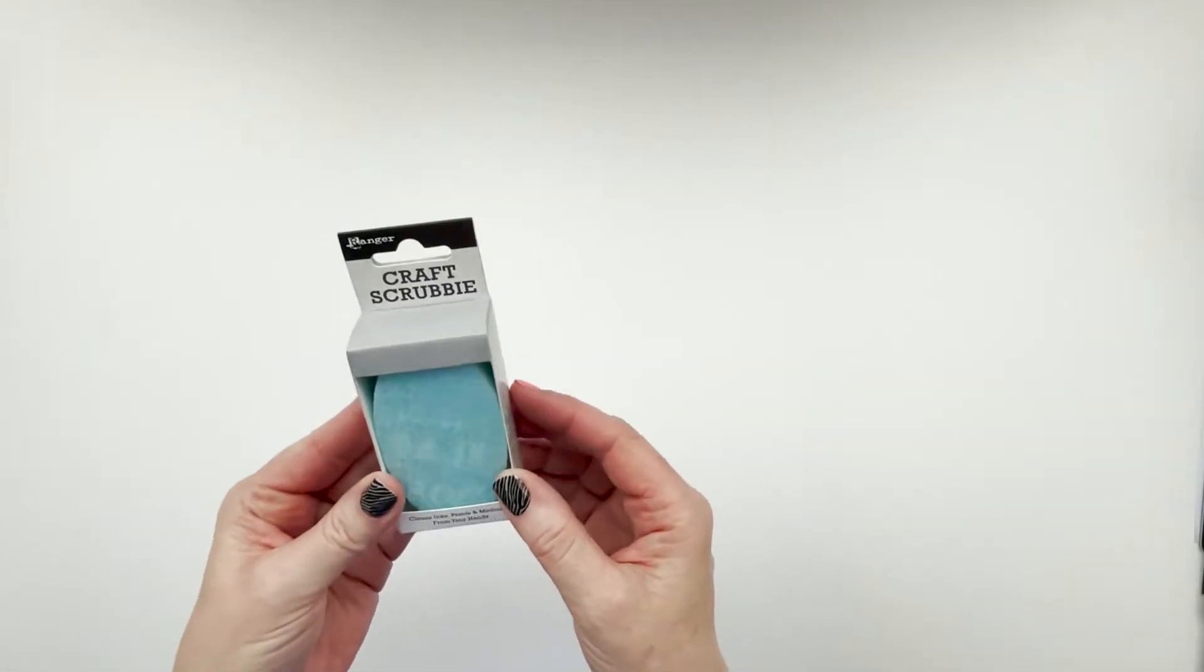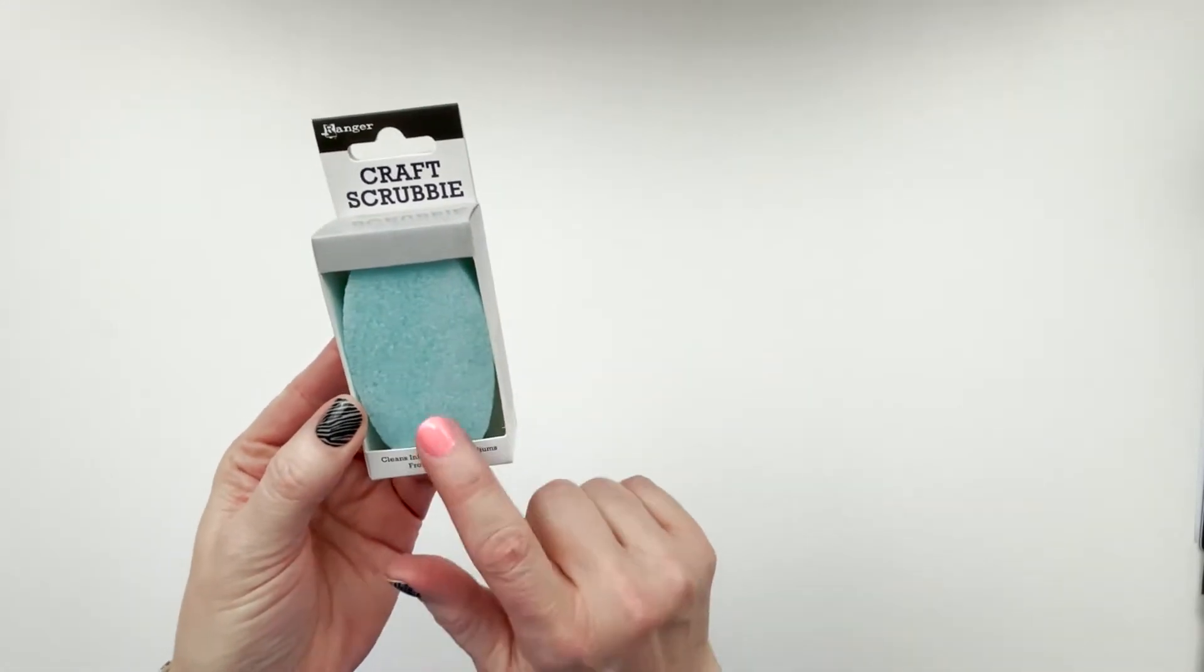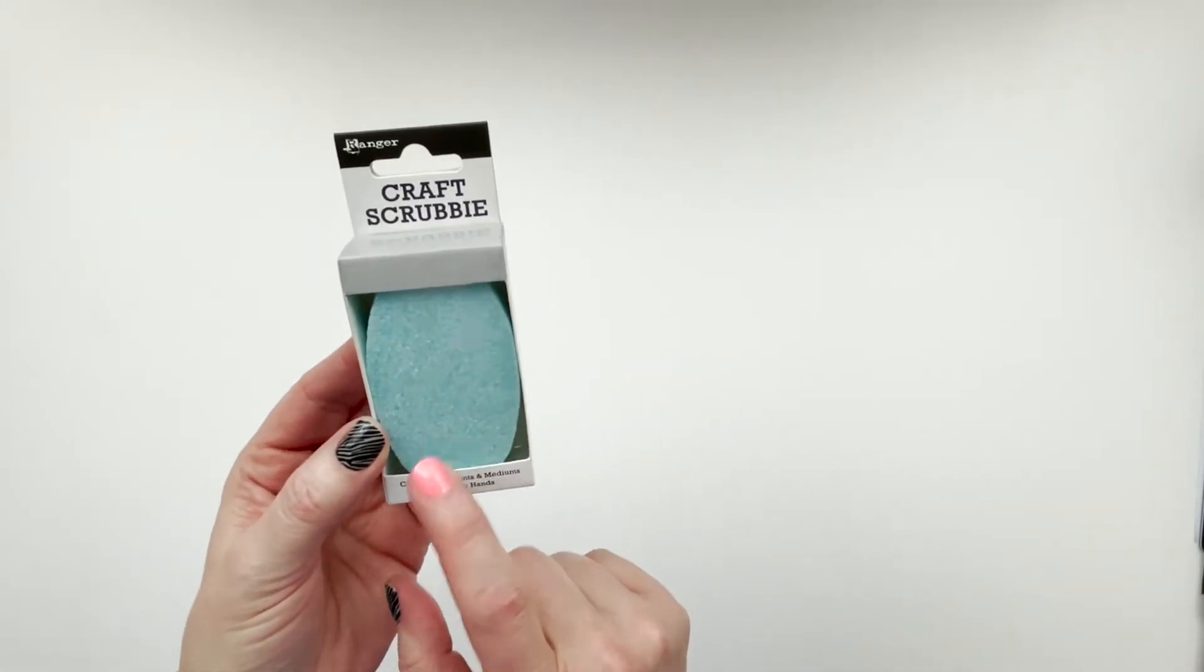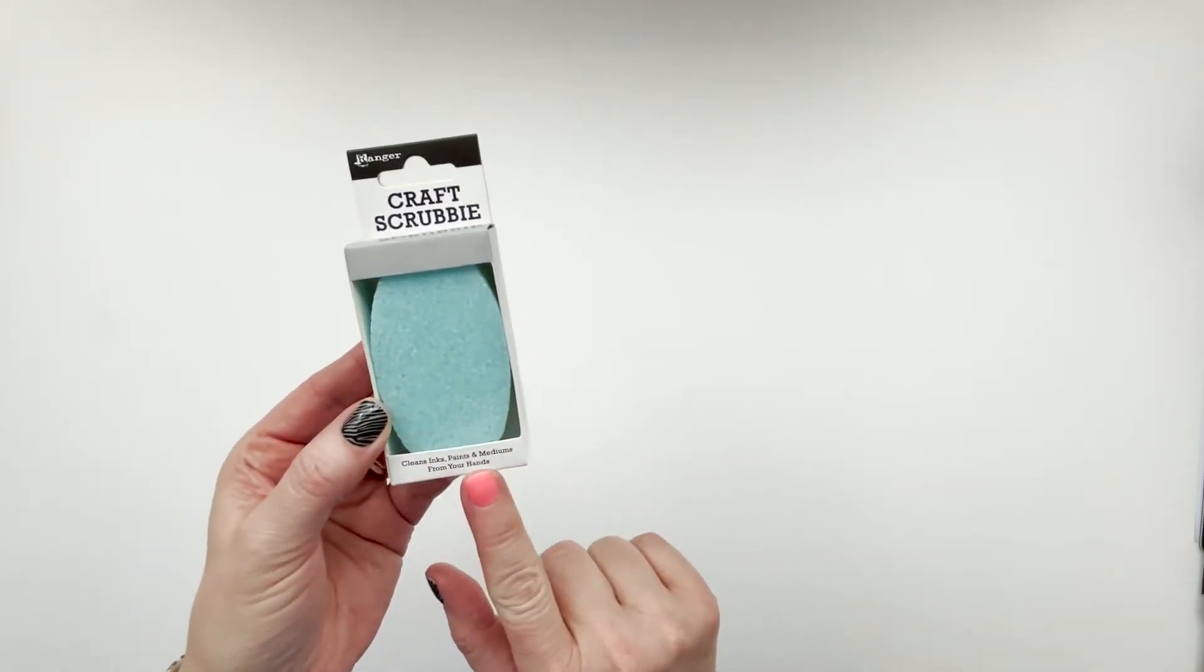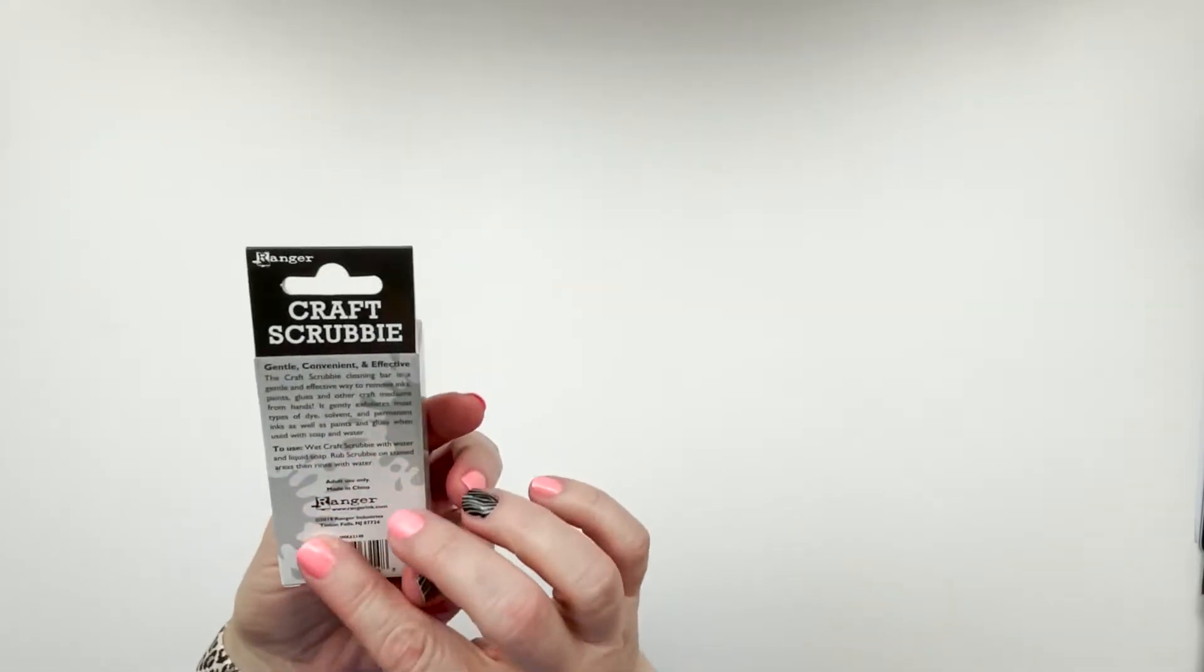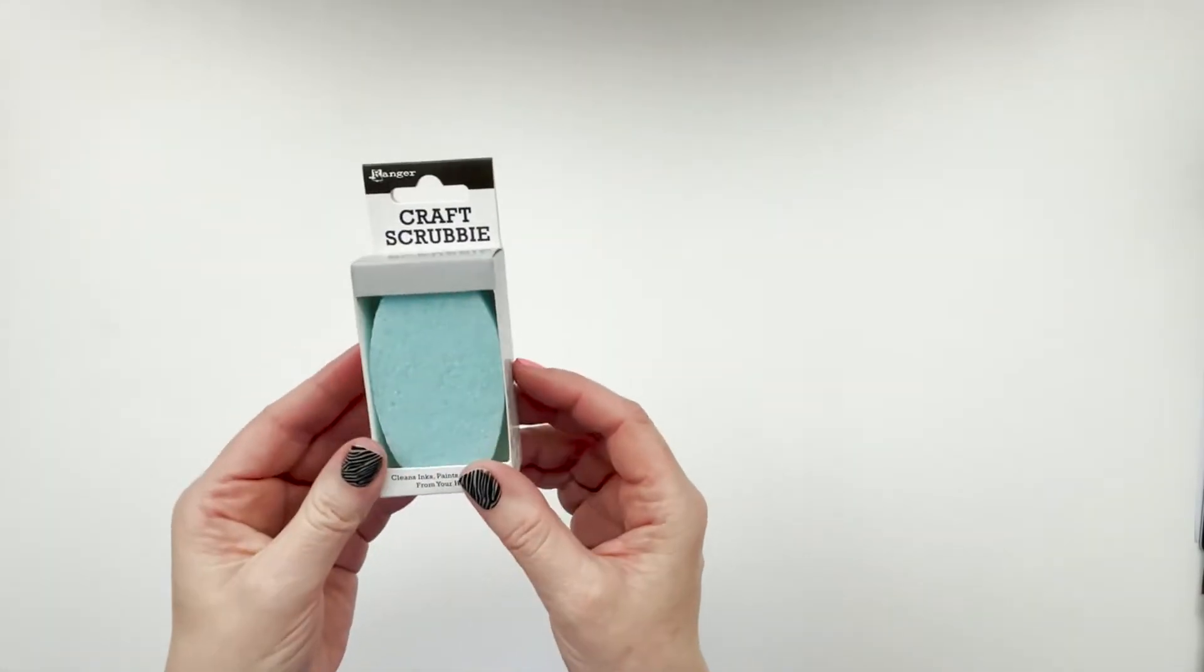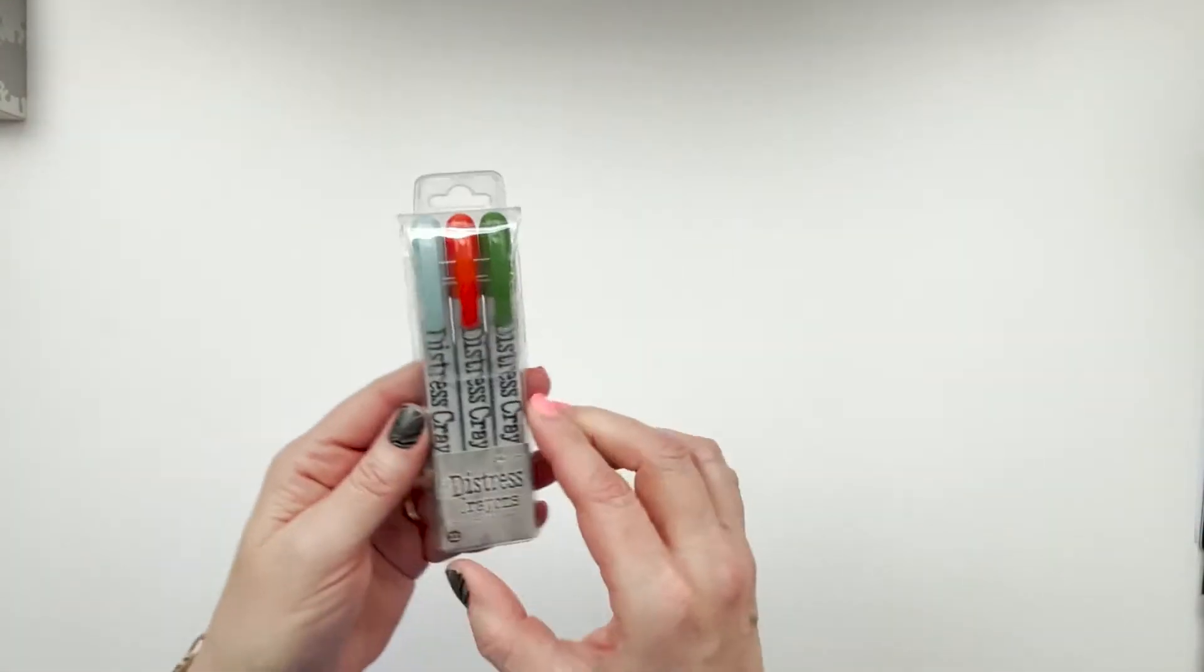So first off is this little craft scrubby from Ranger, and I learned about this through Alice Bowl with Scrap Happy. It's supposed to take ink, paints, and mediums from your hands, and she says it works, so I'm gonna give that a try. So that was my first thing.